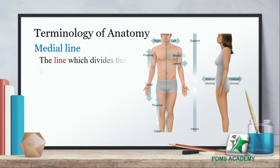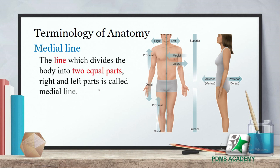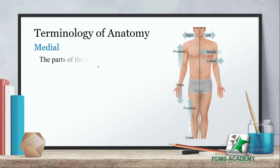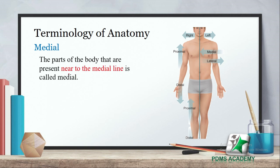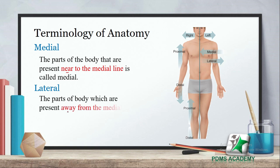The next terminology is medial line. The line which divides the body into two equal right and left parts is called medial line. Medial line ایک imaginary line ہوتی ہے جس کے ذریعے ہم body کو دو equal parts میں تقسیم کر دیتے ہیں جو ایک دوسرے کے mirror images ہوتے ہیں۔ اس line کو جو left اور right parts میں body کو تقسیم کرتی ہے اسے ہم بولتے ہیں medial line۔